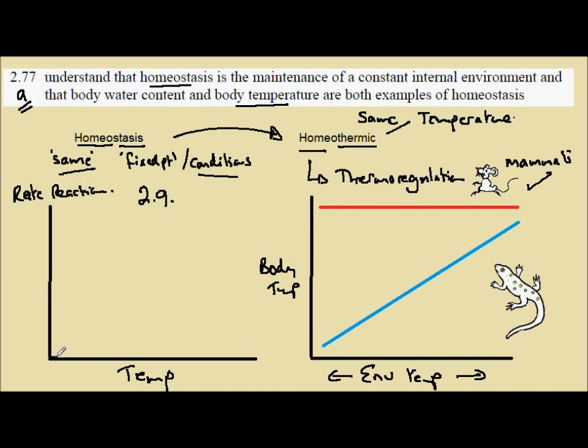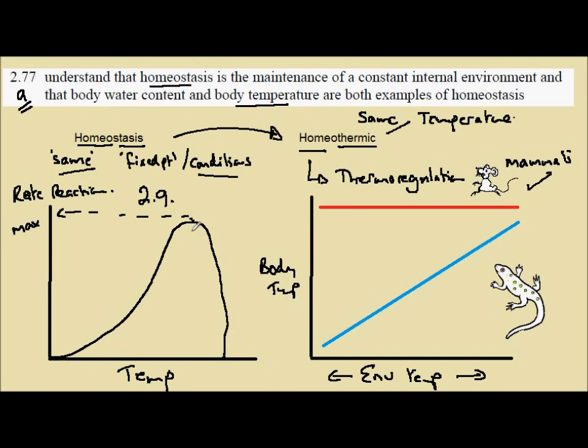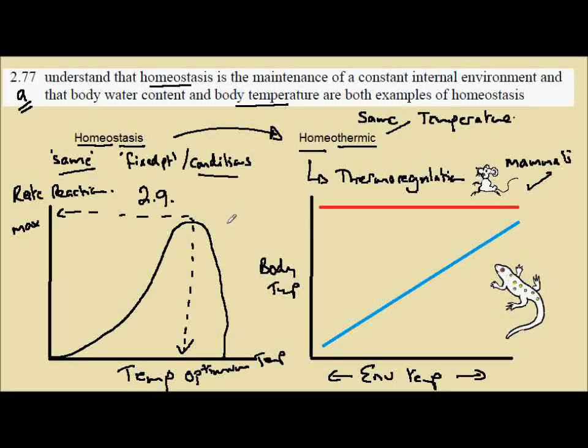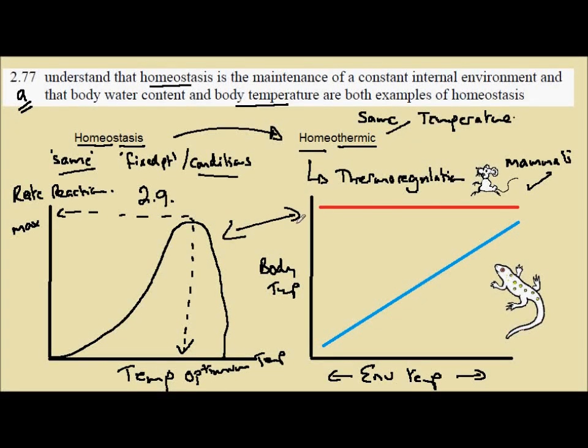You'll remember the characteristic curve of rapidly increasing rates of reaction as we increase the temperature, but then a rapid drop-off. And you'll also recall that the maximum rate of reaction is achieved at a particular temperature, and that is known as the optimum temperature for that enzyme.